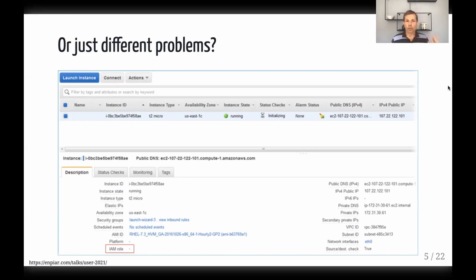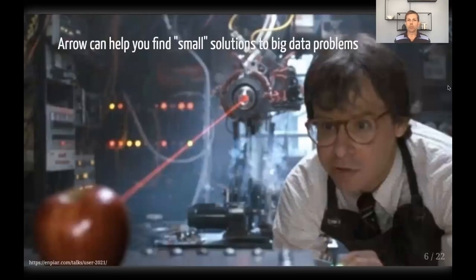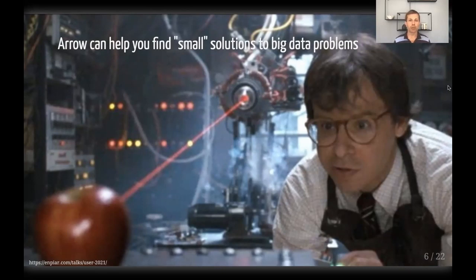What I'm going to show you today are examples where people have used Arrow to effectively shrink their big data problems — to help you find small solutions to your big data problems, making them no longer big data problems. They're just data problems that you already know how to solve.